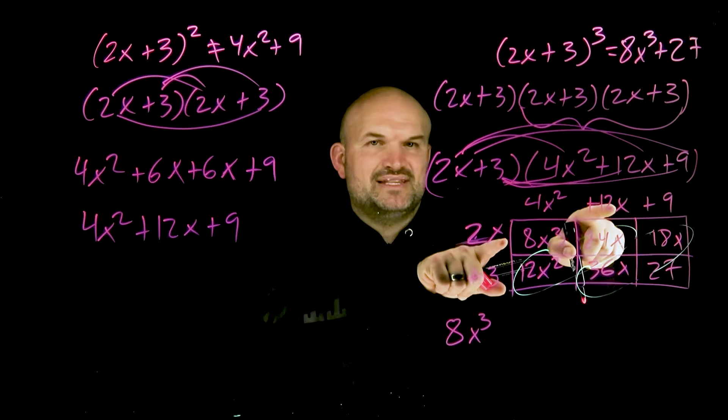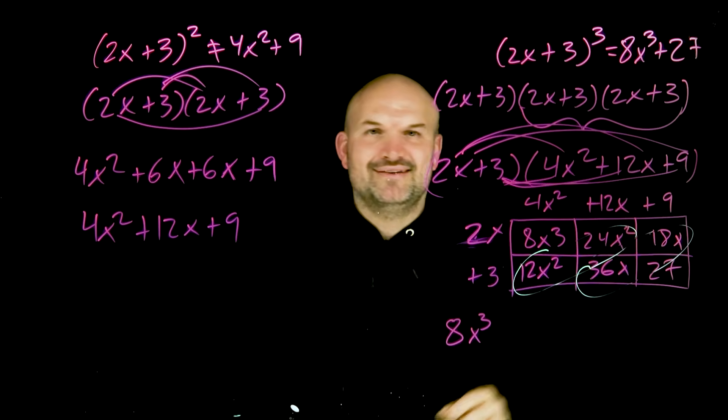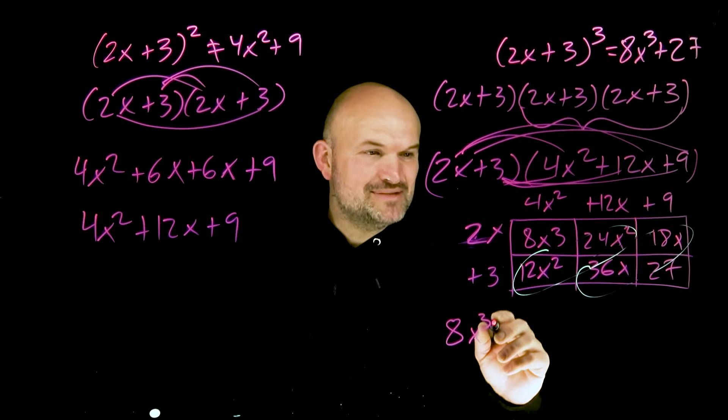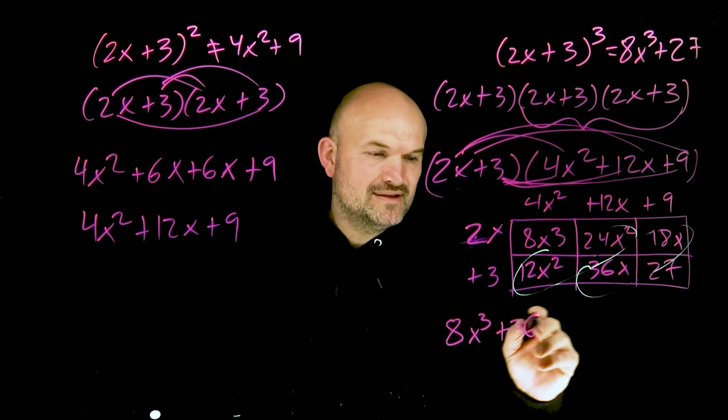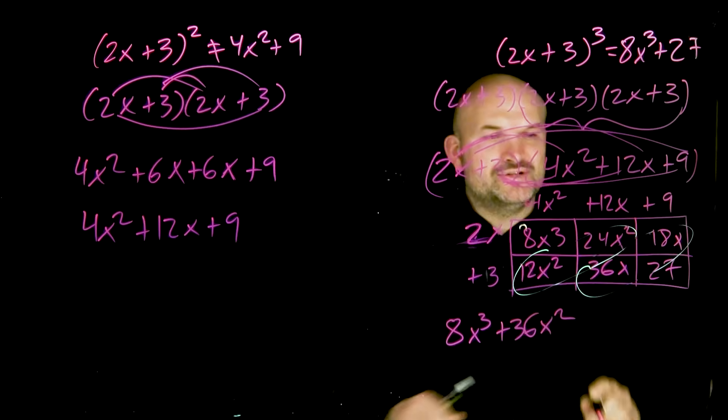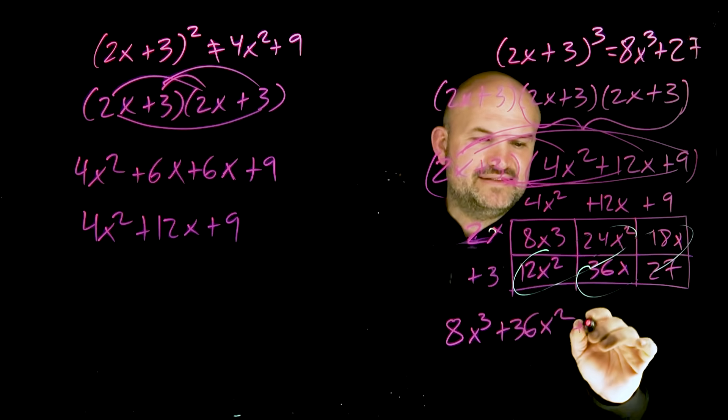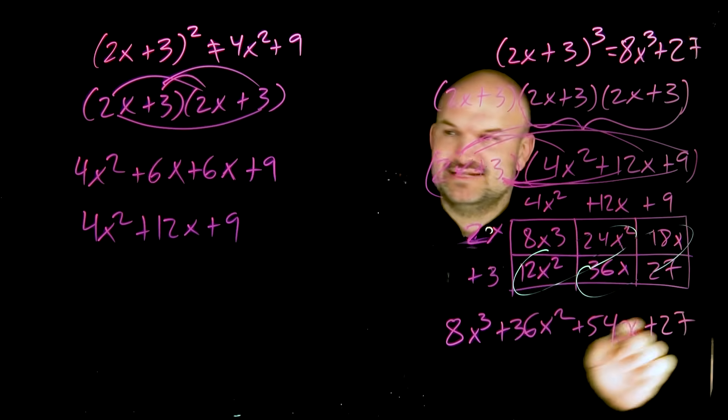I swear I didn't plan on doing that. So this is positive 36x squared. These are going to add up, 36 plus 18 is 54x, plus 27.